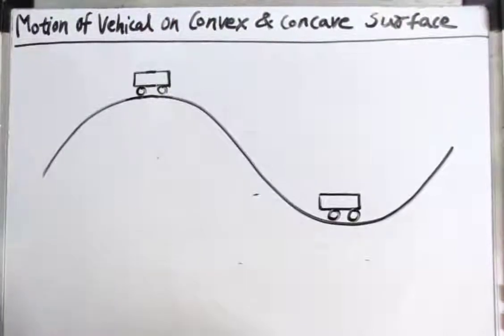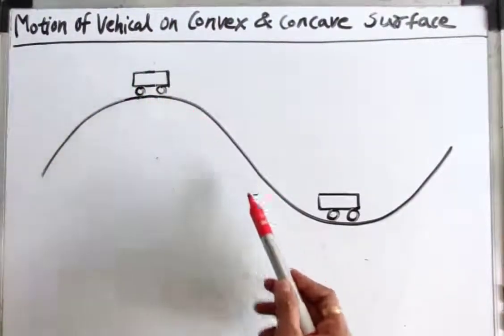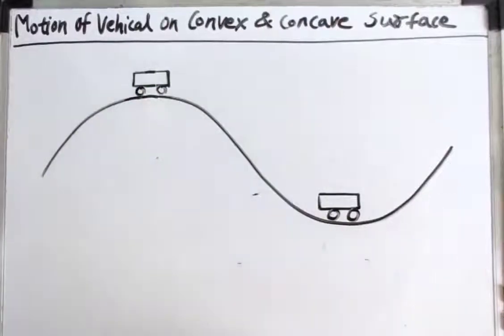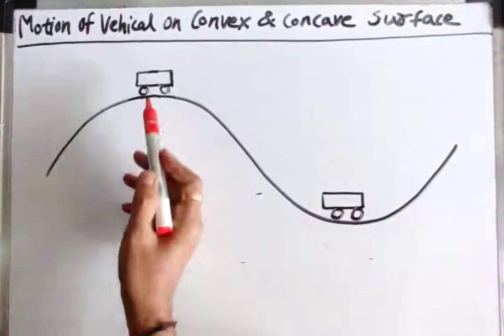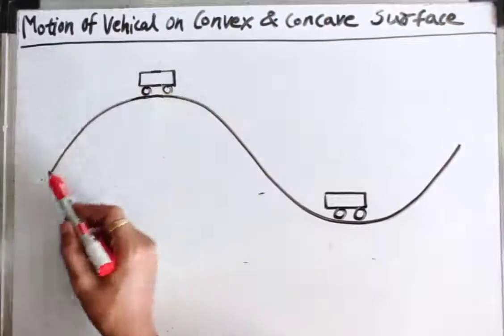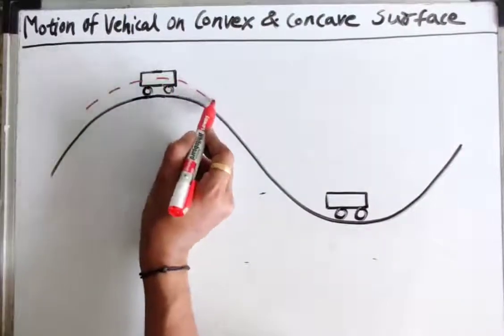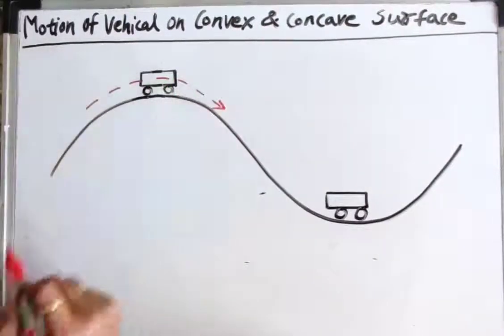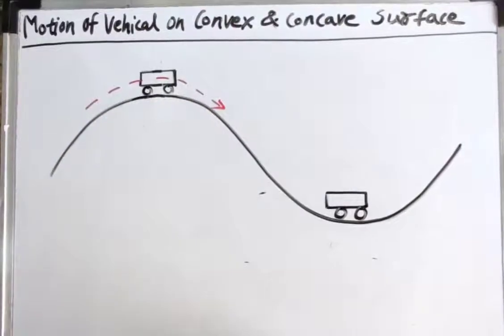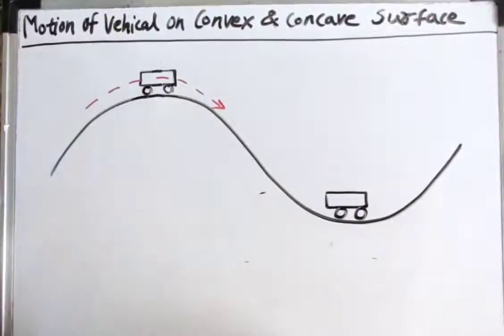In this video, we are going to study about motion of a vehicle on convex and concave surfaces. Here we can see a vehicle which is moving along this convex surface and is present at the topmost position of the convex surface.